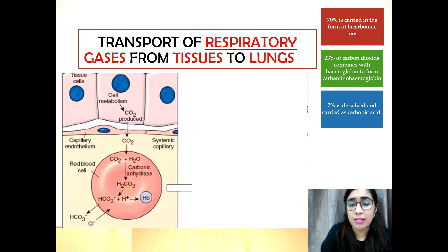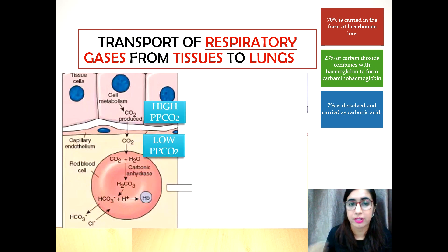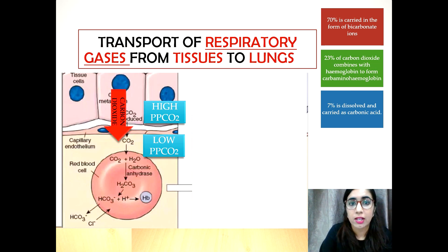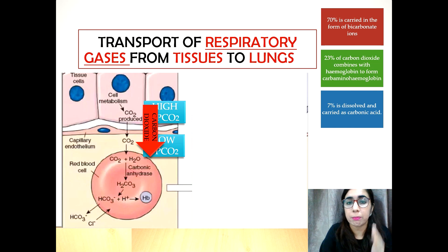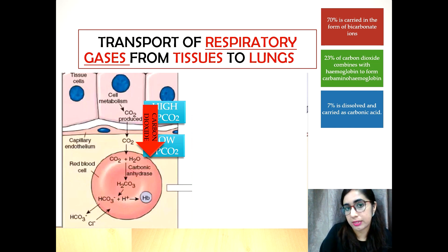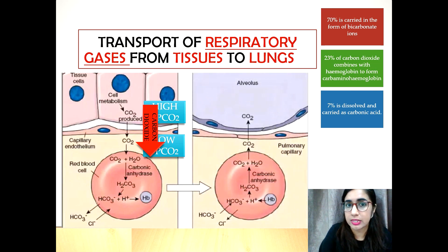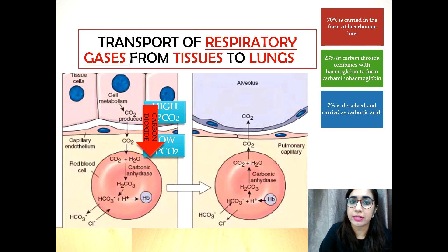Cell bodies or tissues have a high partial pressure of carbon dioxide due to respiration. So carbon dioxide diffuses from the cell bodies following the partial pressure gradient — high to lower — into the blood capillaries. The carbon dioxide is then transported via the blood circulatory system to the lungs to be eliminated. The first form of transport is as bicarbonate ions.